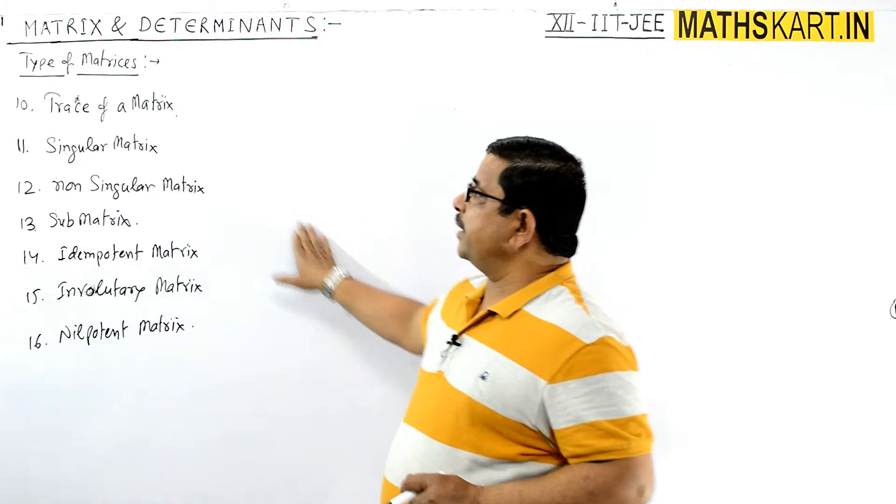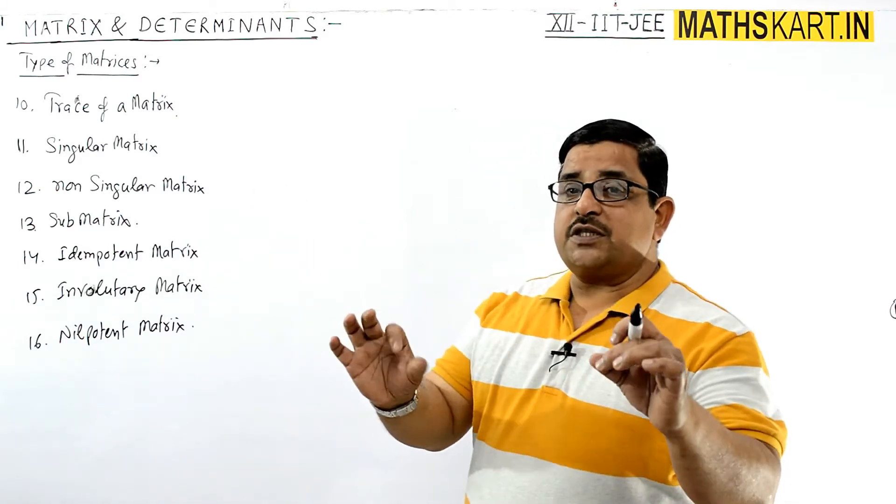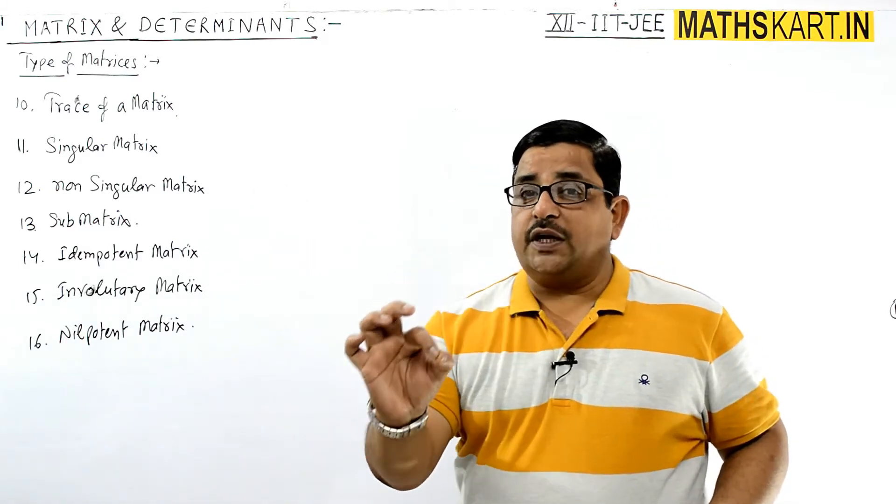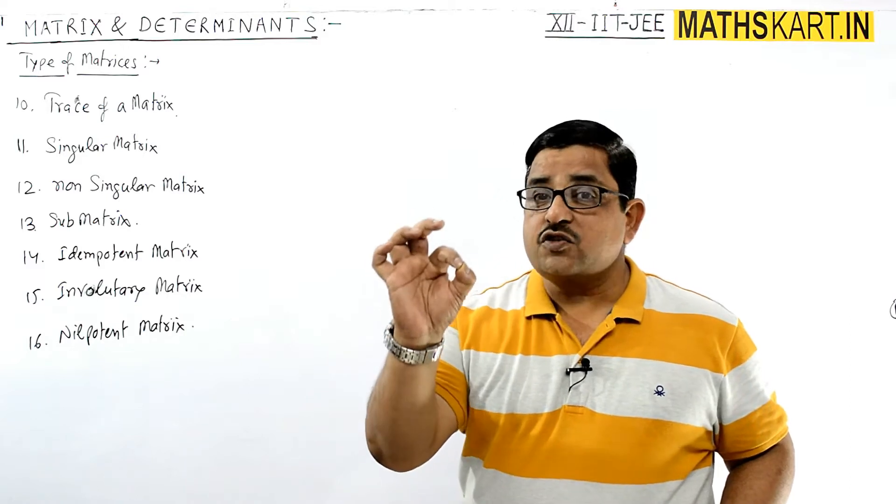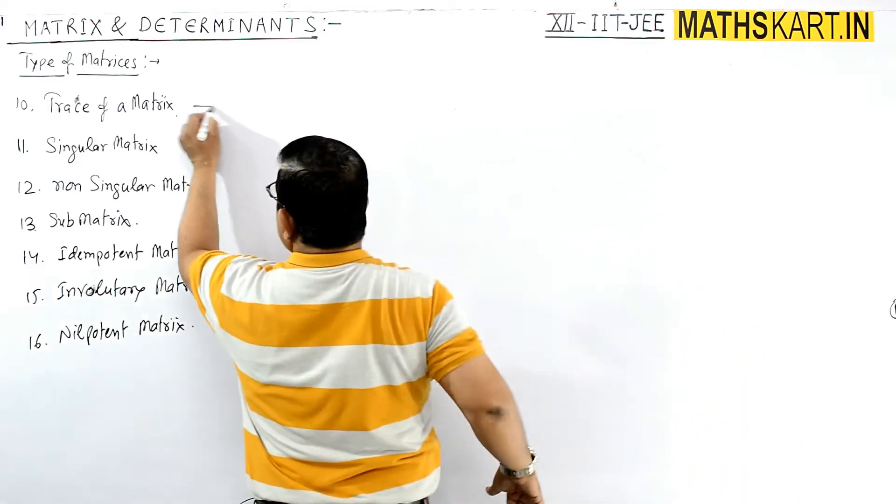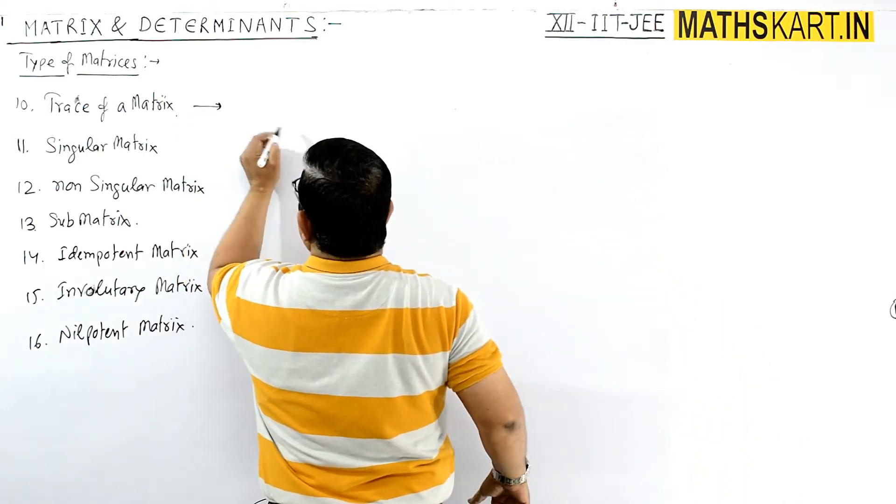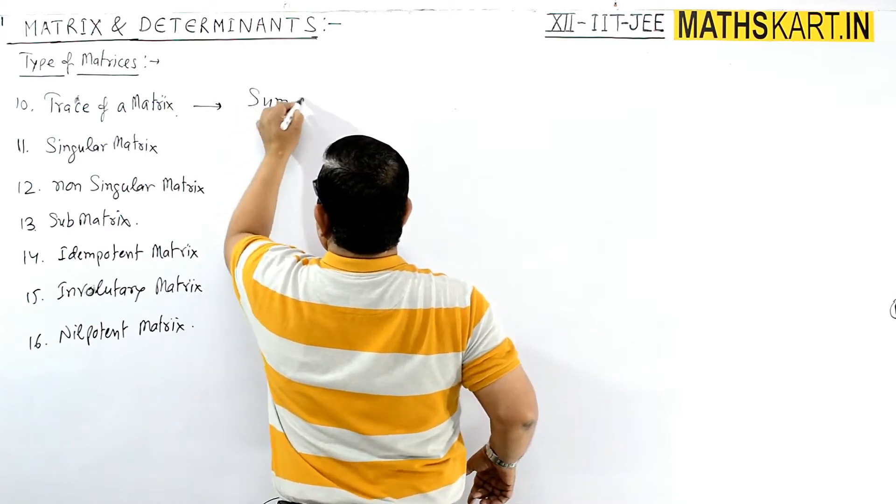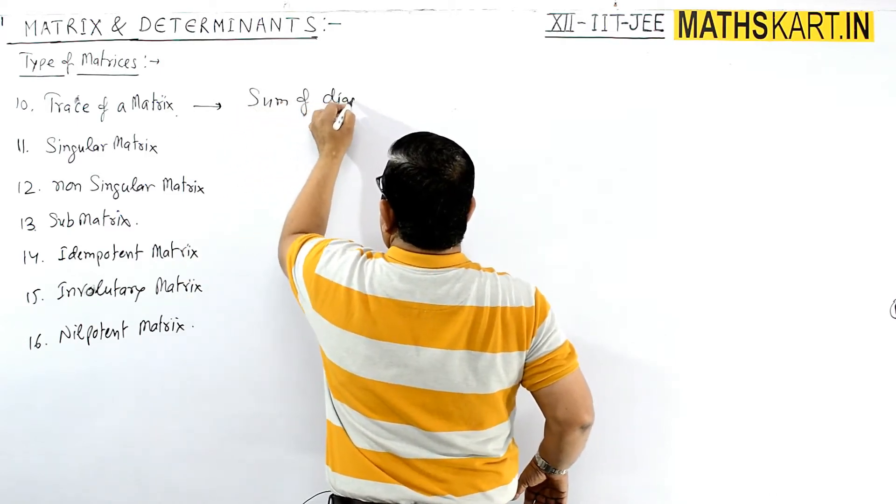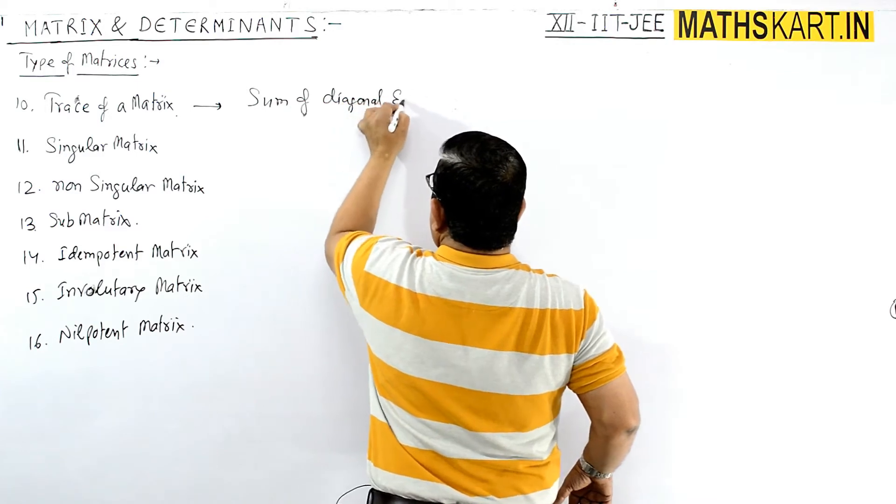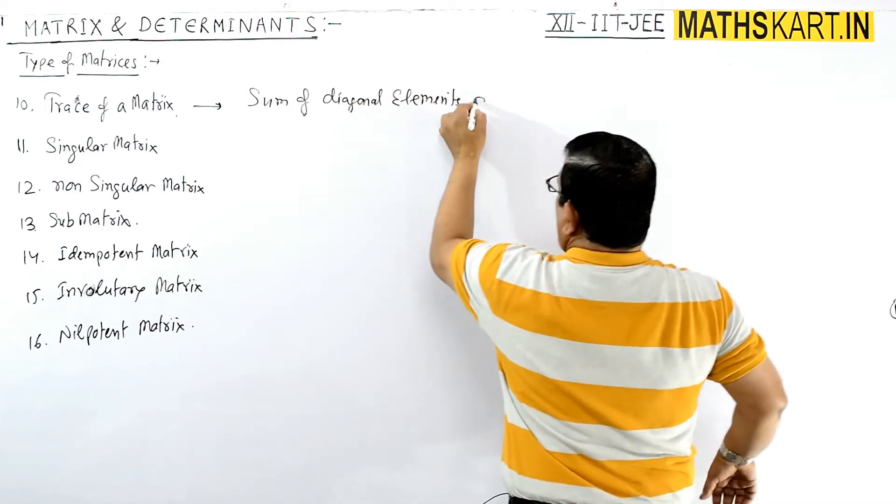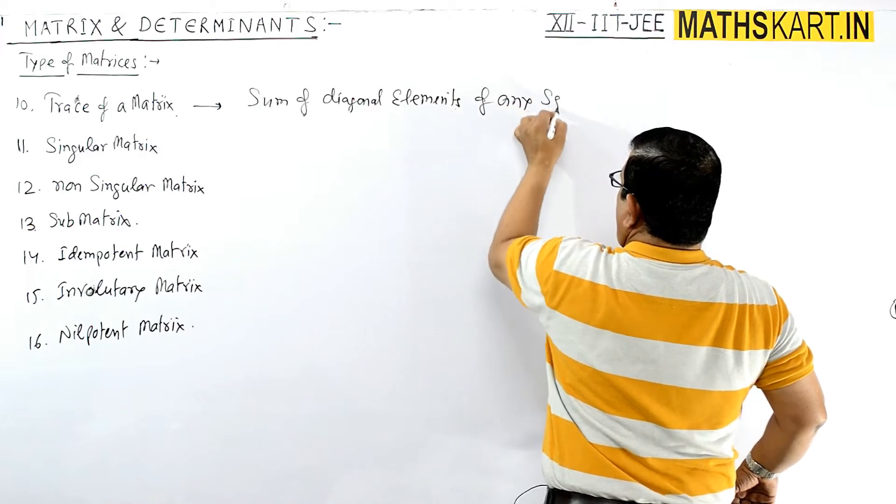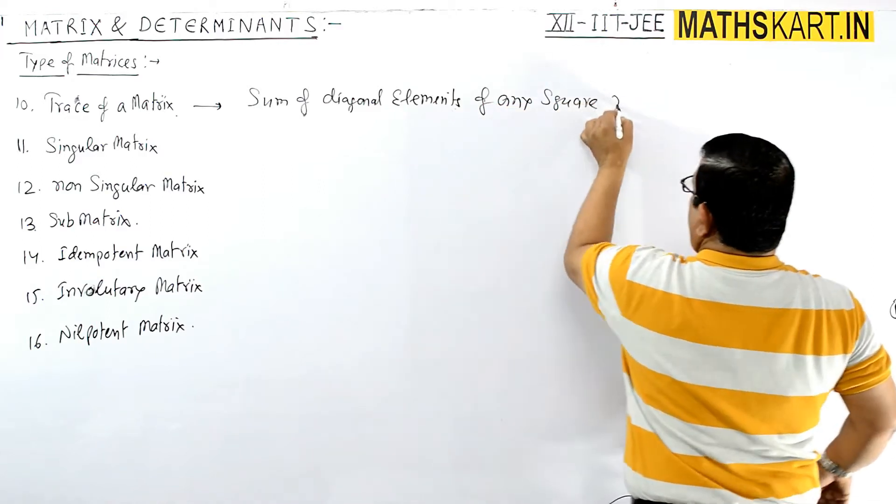Number 10 is trace of matrix. Trace means adding the sum of the diagonal of the square matrix. So this is the trace of matrix A: sum of diagonal elements of any square matrix is trace of matrix A.